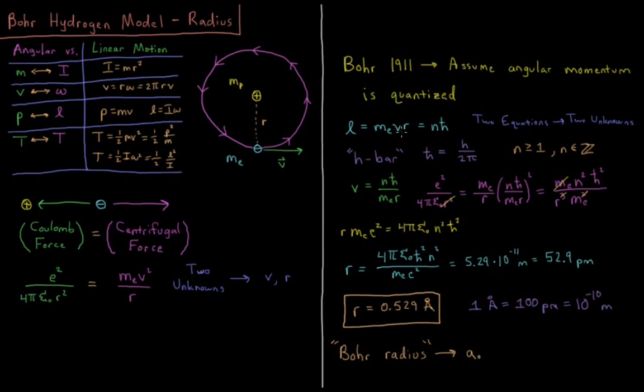Solving this one, we have v equals nℏ over MR. And we can substitute that into this equation here, and what we'll have is our first side, e² over 4πε₀R² equals Me over R times this quantity squared for v². So we have nℏ over MR squared.